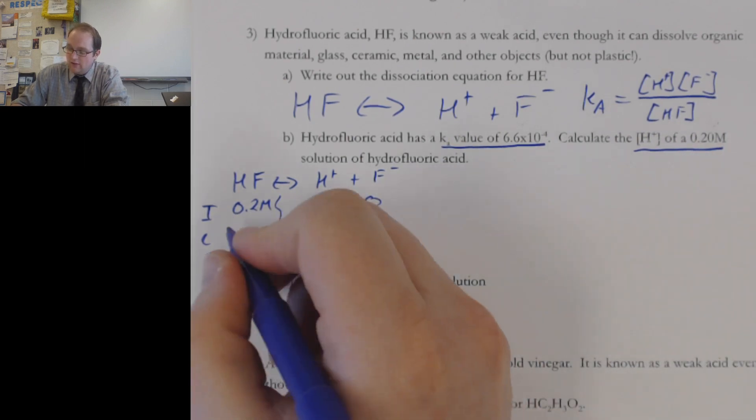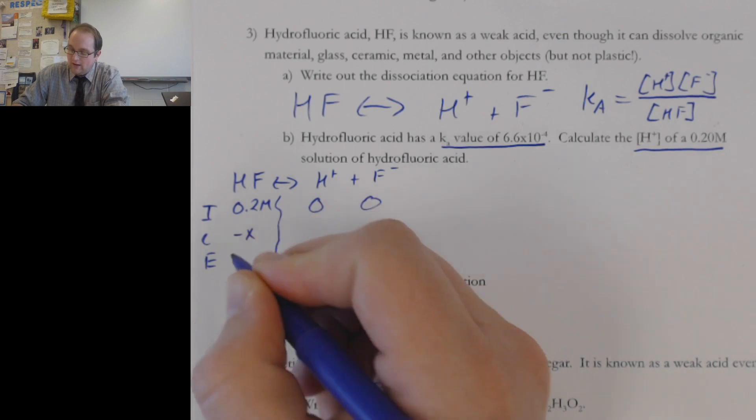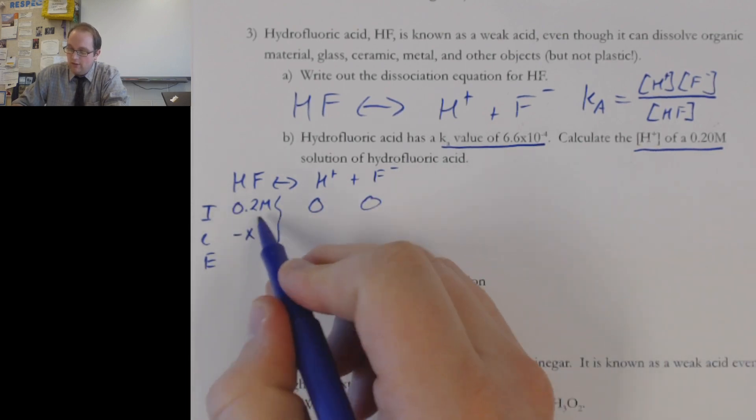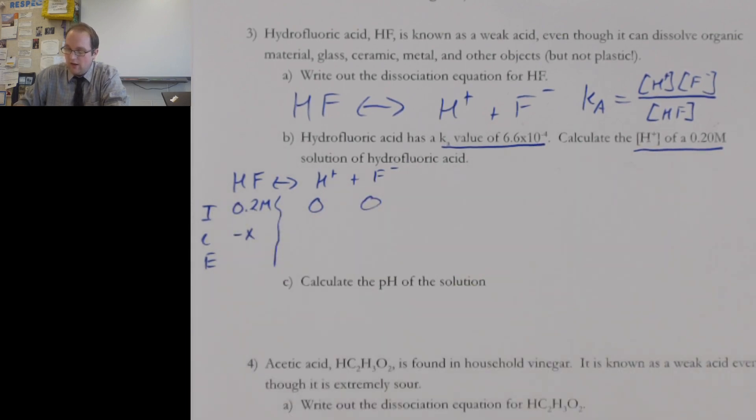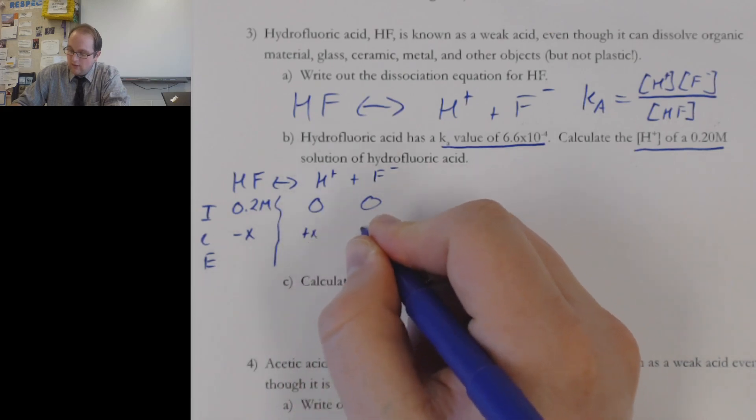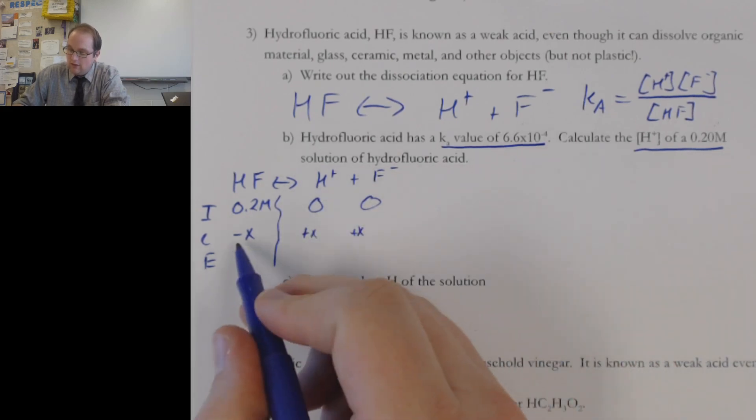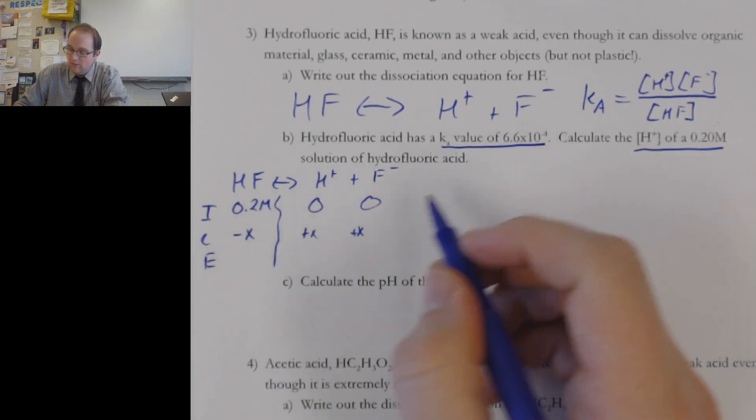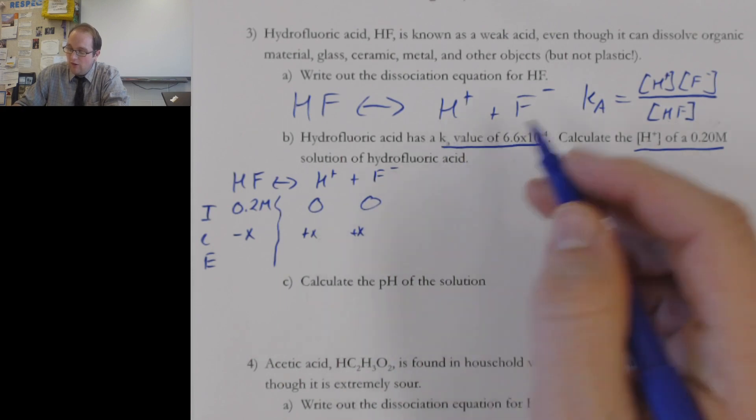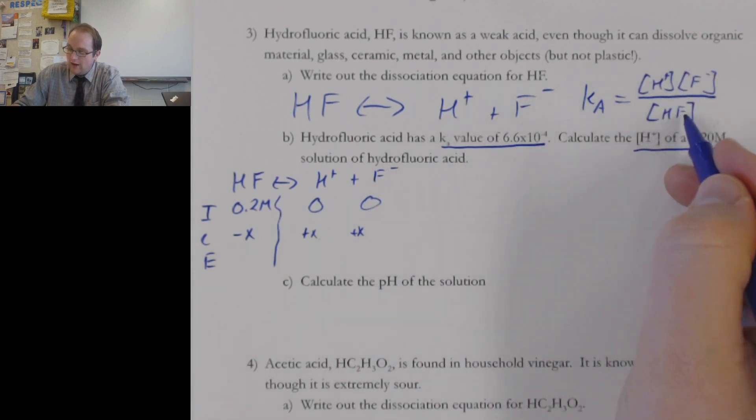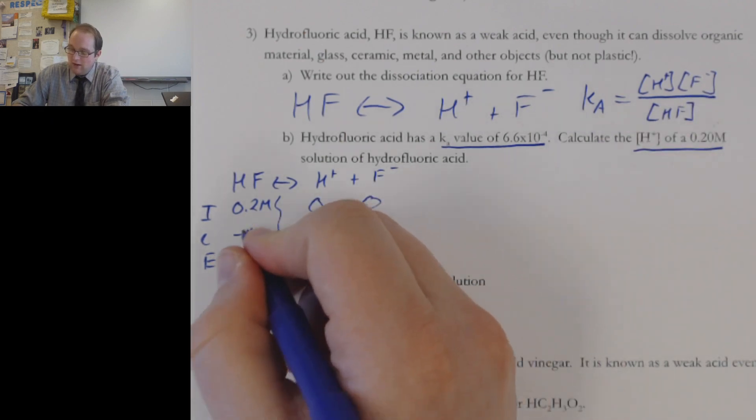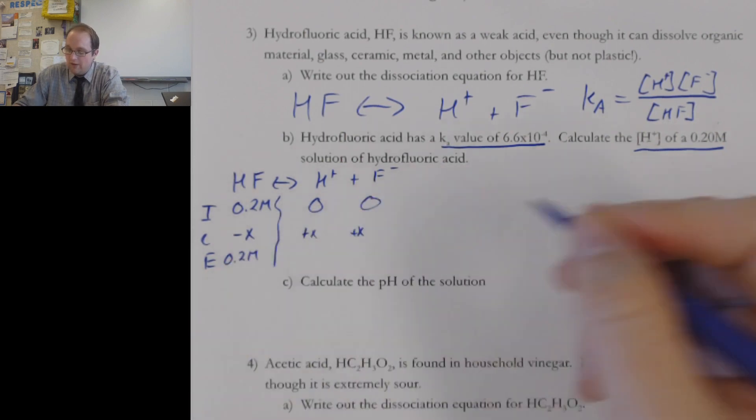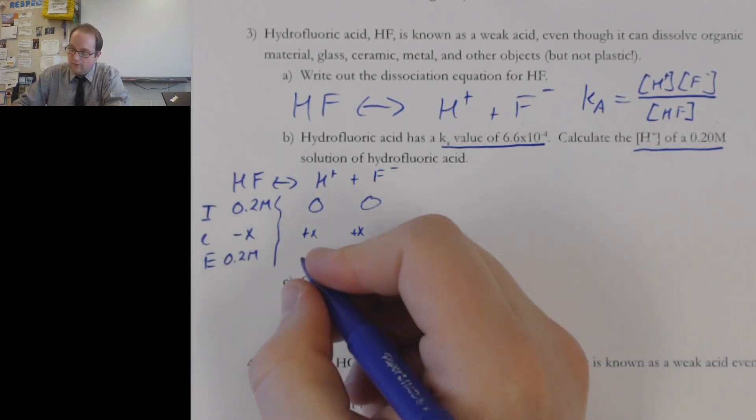So what I can do here is, yes, there is going to be a minus X. Because we're going to be losing some of our HF. And we're going to be creating these guys. But one of the things that we can do here is that we can actually assume that since this Ka is so small, we're making so little product, that only a teeny tiny amount of HF is being reacted, we can actually bring down this 0.2 molar. Because this is barely going to change at all. And this is going to be super useful.